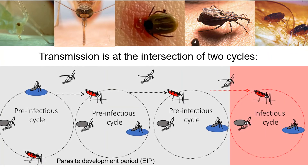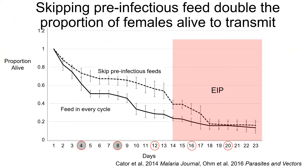An infected female can undergo multiple feeds during the period that the parasite is developing before she's ever able to pass on the parasite, and these pre-infectious feeding cycles are associated with significant amounts of mortality. This leads to a pattern where females that skip these pre-infectious cycles are much more likely to survive the extrinsic incubation period. In an experiment where we controlled when females were allowed to take blood meals, skipping the pre-infectious feeds led to a doubling in the number of females that survived the EIP.